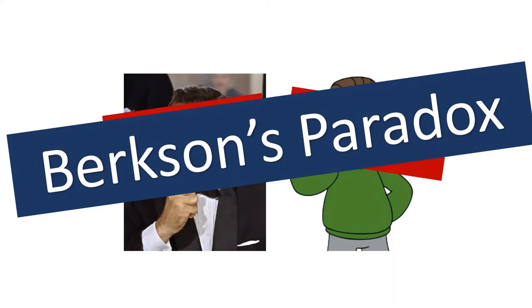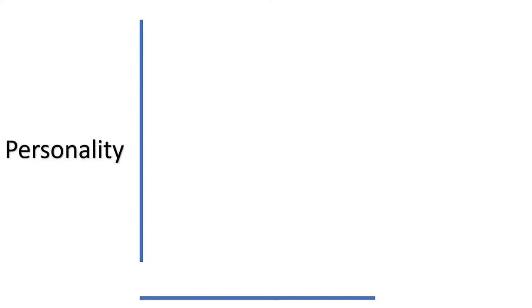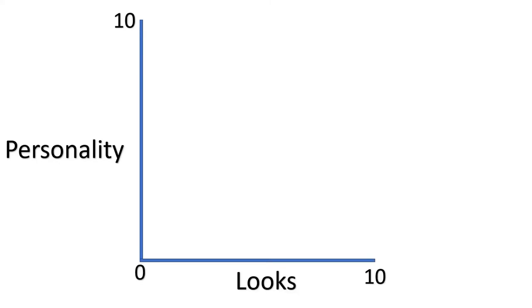To explain, I'll represent it graphically. Let's let the y-axis represent personality and the x-axis represent looks. Both are scaled from 0 to 10. Every man in existence falls somewhere on this plot.